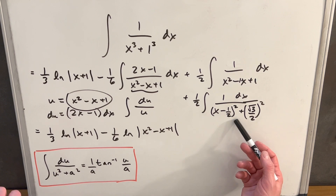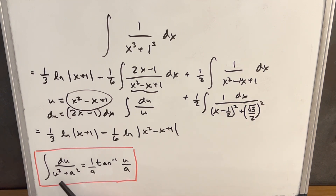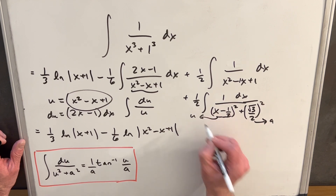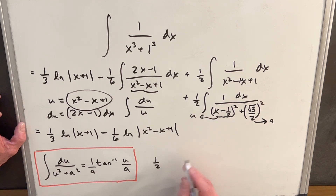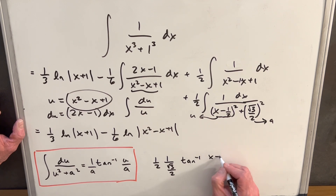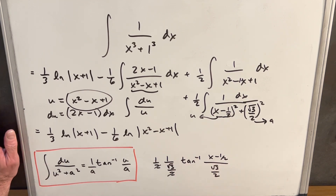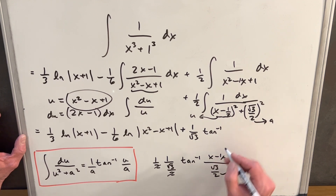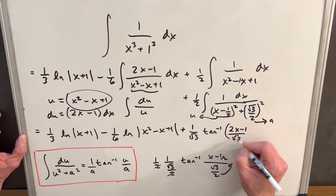We're ready to integrate using the arctan formula: integral of 1 over u squared plus a squared equals 1 over a times tan inverse of u over a. Our u is x minus 1 half and our a is square root of 3 over 2. With the 1 half out front, we get 1 half times 1 over square root of 3 over 2, times tan inverse of x minus 1 half over square root of 3 over 2. The 2's cancel, giving 1 over square root of 3 times arctan of 2x minus 1 over square root of 3, plus C.